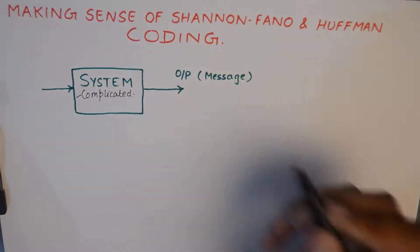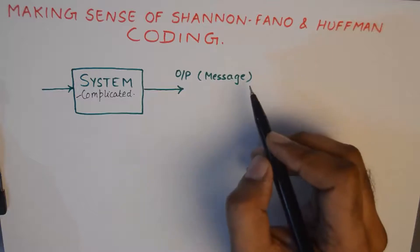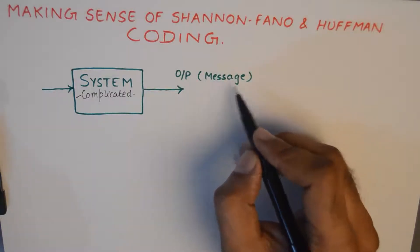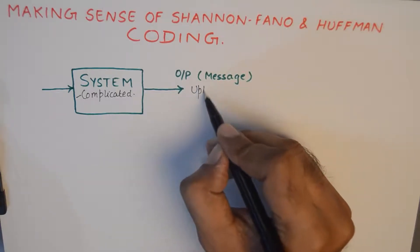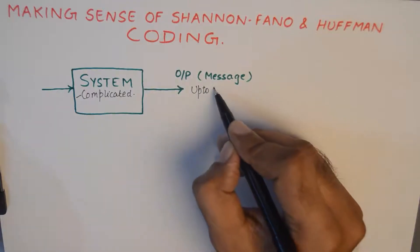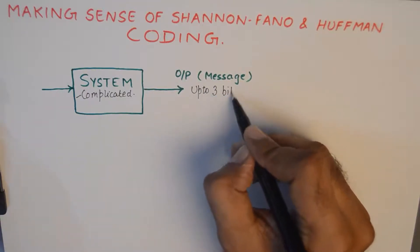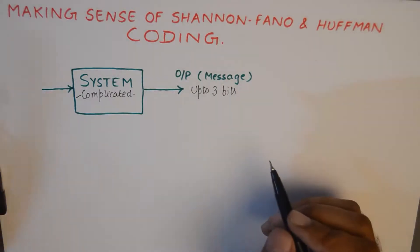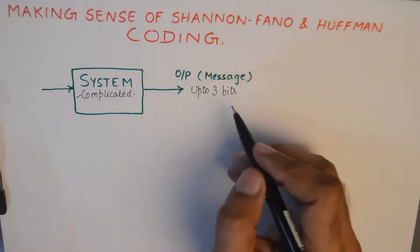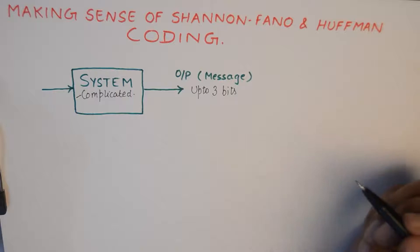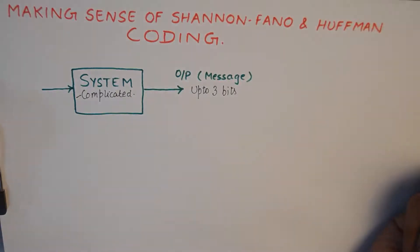By the meaning of complication, it is assumed that the messages generated by this system can be up to, for example, three bits. This system will generate a message that could be one bit long, this system can generate a message that could be two bits long, and this system can generate a message that could be three bits long. So that is what makes the system complicated.